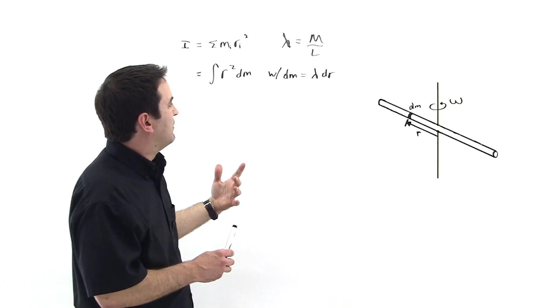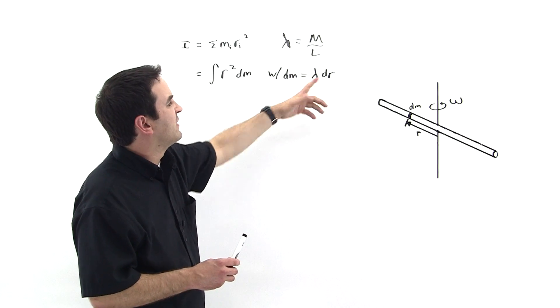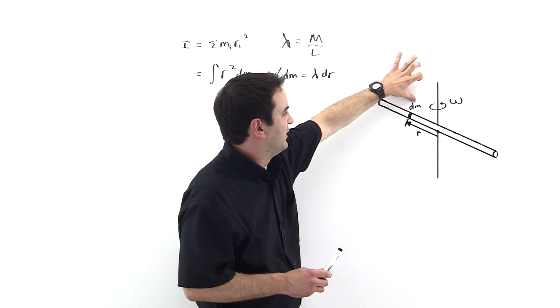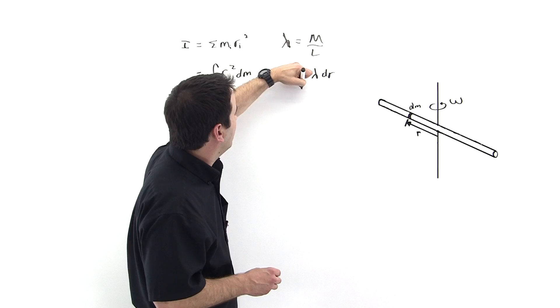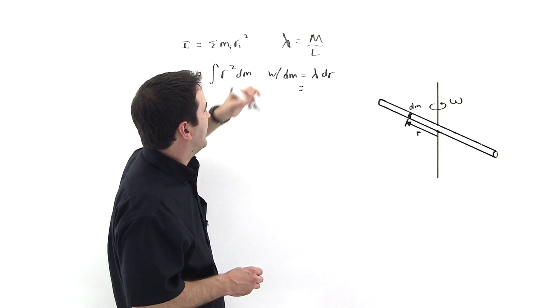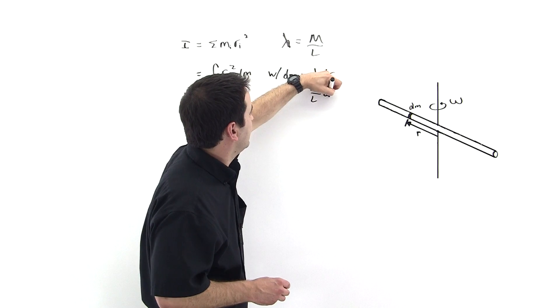So dm is equal to lambda dr, right? Kilograms per meter times meter gives kilograms. So that's the mass of this little bitty element dm. But then let's substitute in for lambda is m over l, the mass density of the rod. So m over l times dr, like so.